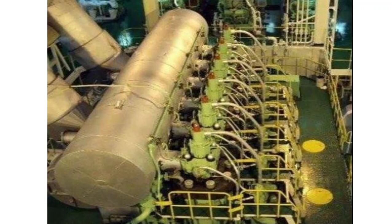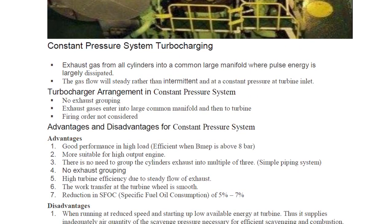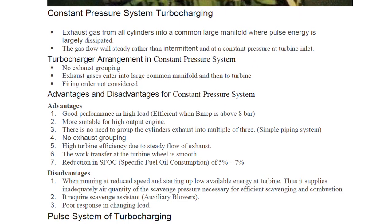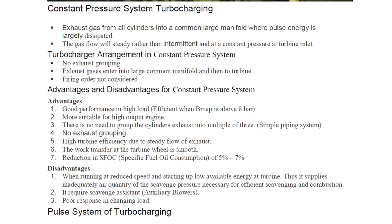In this media we are going to learn about turbocharging — constant pressure type and pulse type. When we talk about the constant pressure system, exhaust gas from all cylinders comes into a common large manifold where pulse energy is largely dissipated. The gas flow is steady rather than intermittent and at a constant pressure at the turbine inlet.